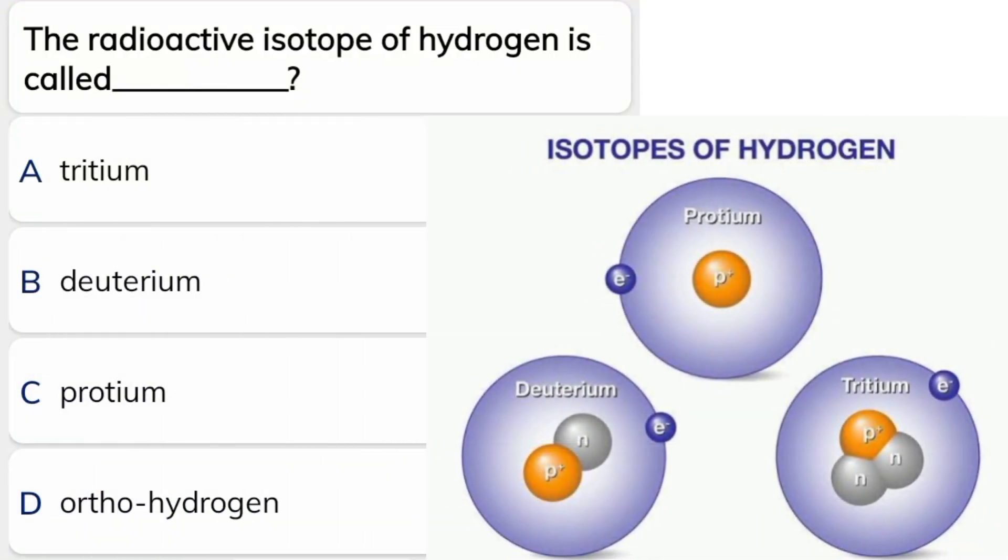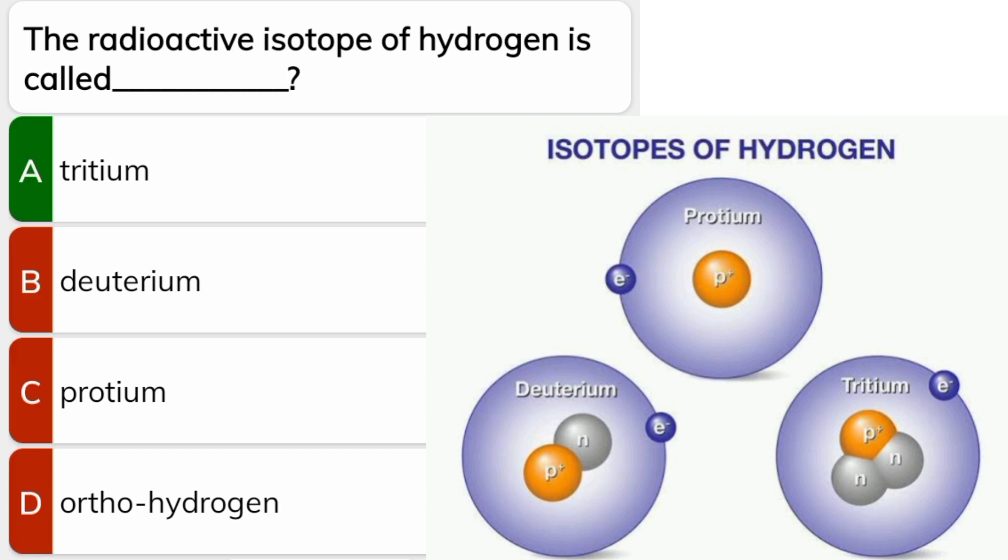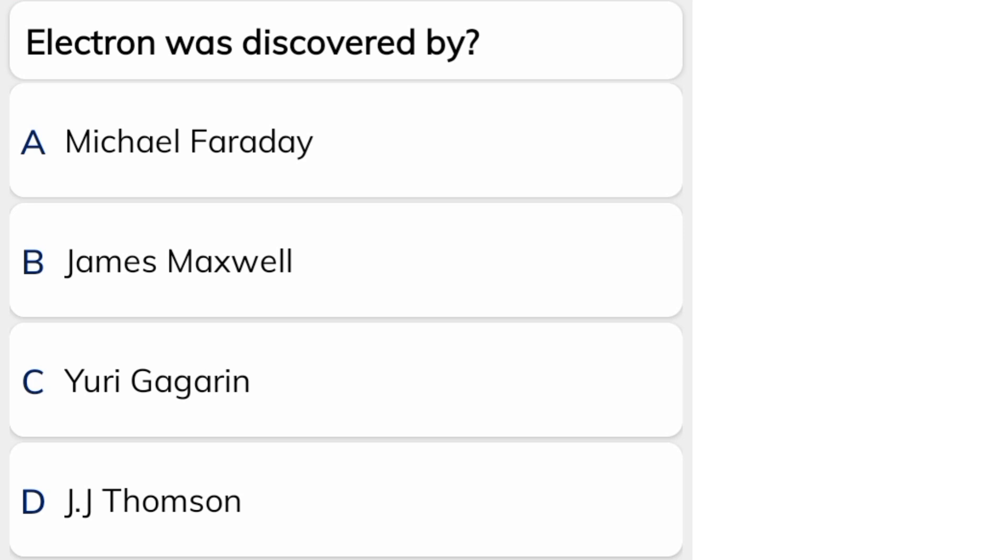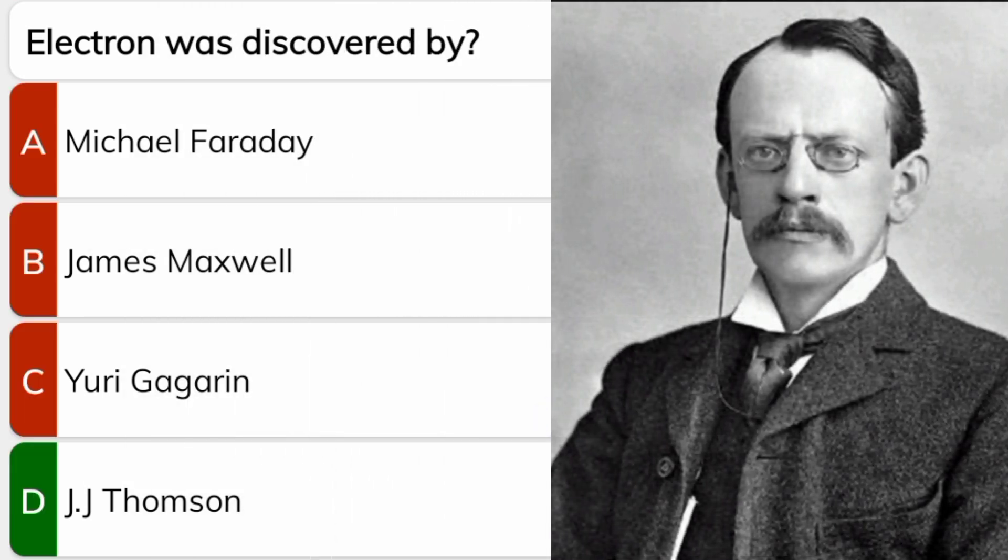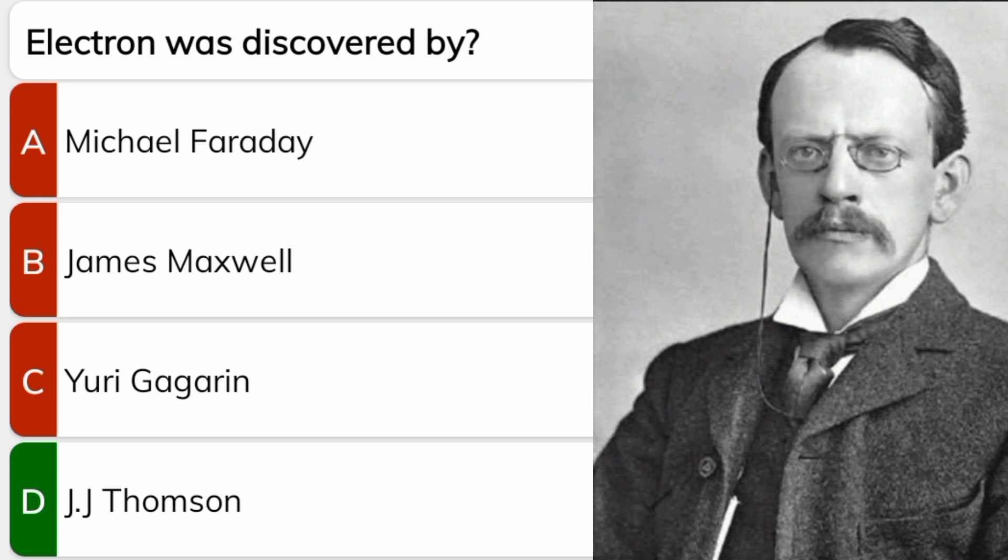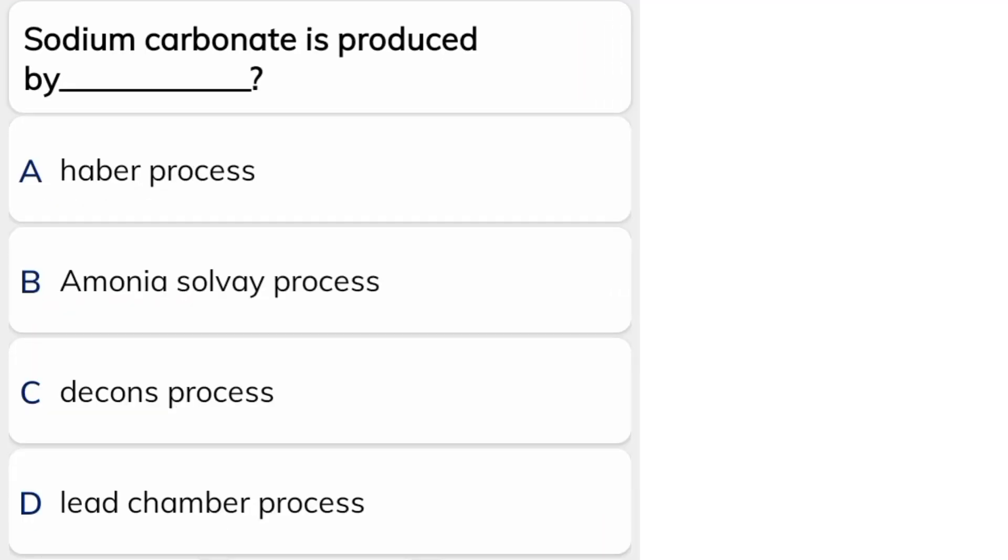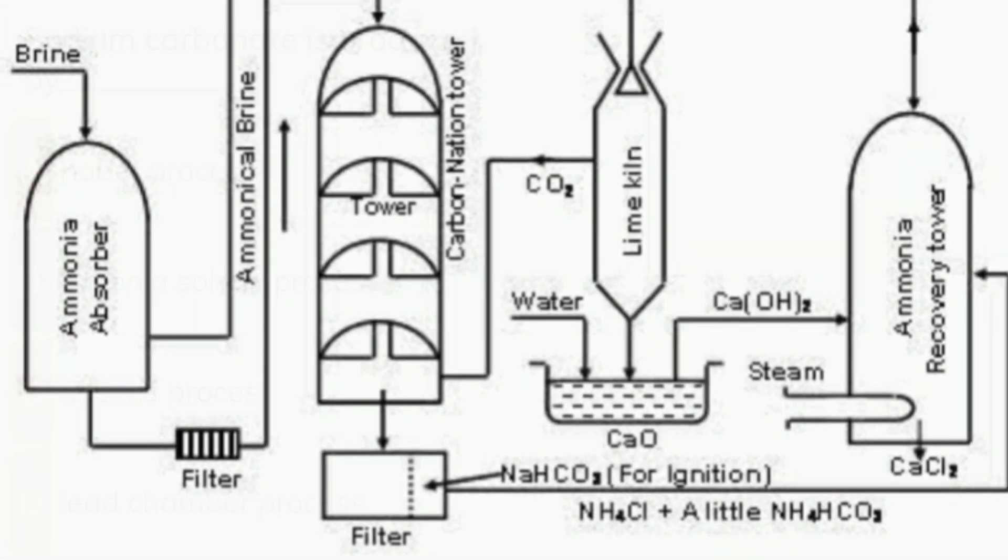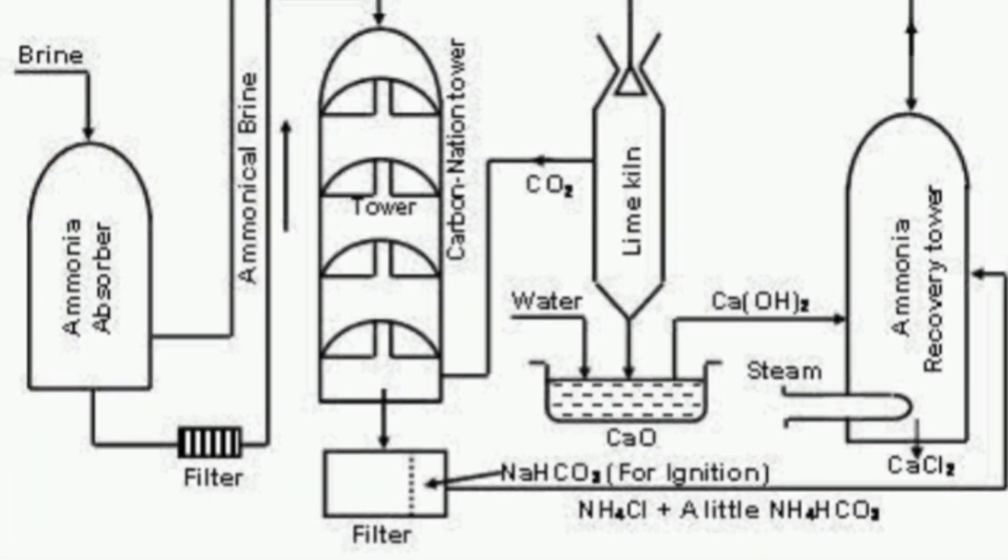The radioactive isotope of hydrogen is called tritium, correct answer option A. Electron was discovered by J.J. Thomson, correct answer option D. Sodium carbonate is produced by the ammonia Solvay process.